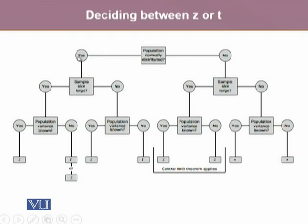Similarly, for a normally distributed population with large sample size but population variance unknown, we could use T or Z, because for a large sample, T approximates pretty well to the Z distribution.